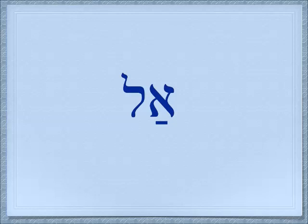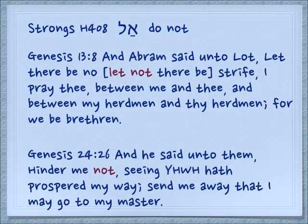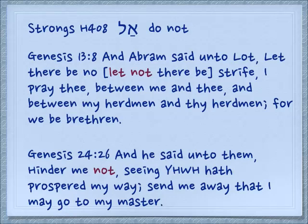Getting back to the negative particles: we've already covered al in the el-al series, and I will put a link to that below. Al is used to negate a command which is a temporary command — it's not permanent forever. It might be just for the case of the person who is either receiving or giving the command. Genesis 13.8: 'And Abram said to Lot, let there be no strife.' Literally in Hebrew, let not there be — al tehi. 'I pray thee between me and thee, and between my herdmen and thy herdmen, for we are brethren.' Genesis 24.26: 'And he said unto them, hinder me not.' It's a temporary request from Eliezer to the people in Laban's household.